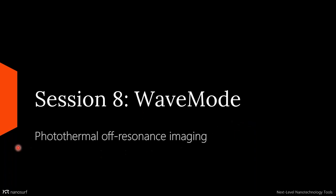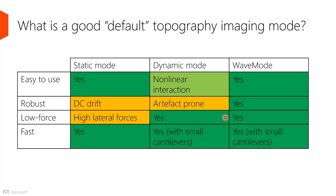Wave mode in general is more descriptively a photothermal off-resonance imaging. What I want to start with is a bit of a question about general AFM imaging — what's a good mode to use if you just need to use AFM for something in general? You've got a few different imaging modes: things like static mode, dynamic mode, and now wave mode.